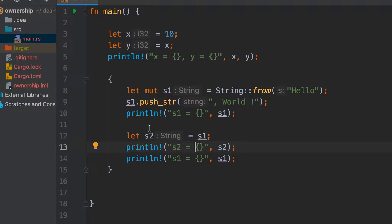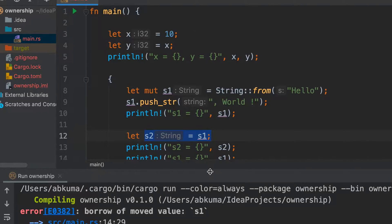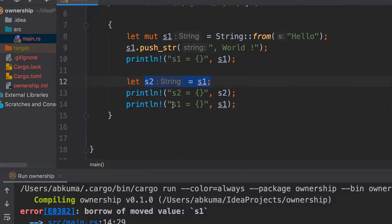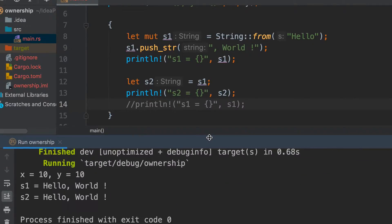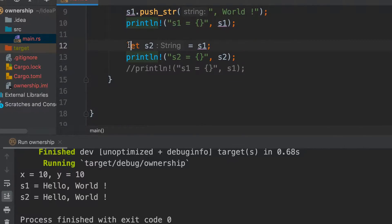This was our earlier code and here we had assigned s1 to s2. When we ran this we saw that it gave error because we were using s1. If we comment out this line it should work fine because s2 is the owner.